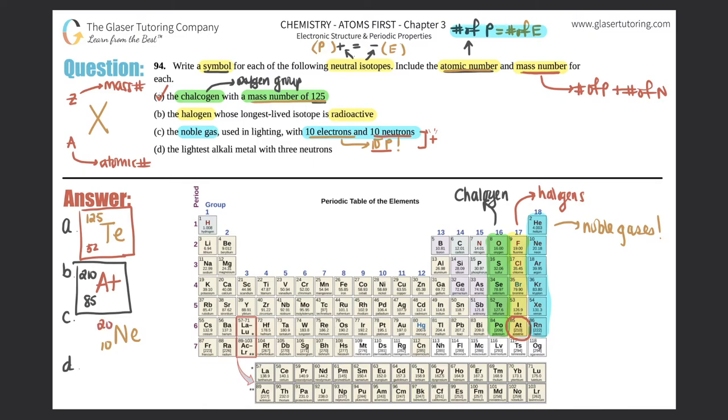Last but not least, part D: They say the lightest alkali metal with three neutrons. Where are your alkali metals? That's all the way on the left-hand side. That's this group from lithium all the way down to francium.